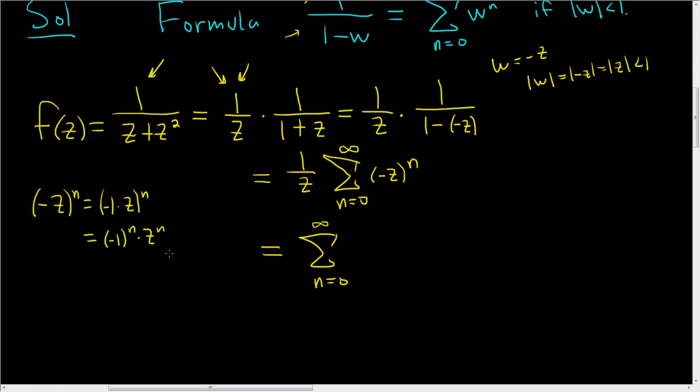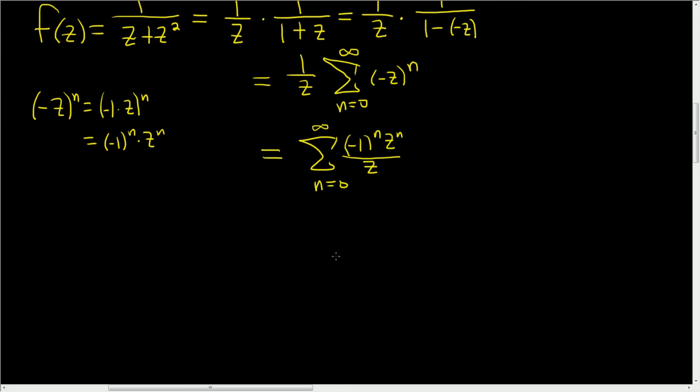So this is (-1)^n z^n, and we can distribute the 1/z, so this is being divided by z. We can keep going. This equals the infinite sum as n runs from 0 to infinity of (-1)^n z^(n-1).